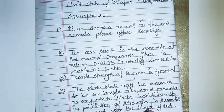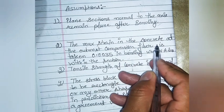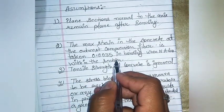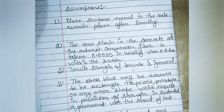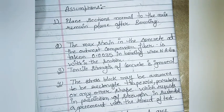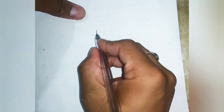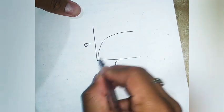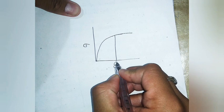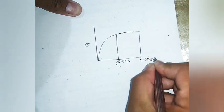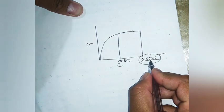The maximum strain in concrete at the outermost compression fiber is taken as 0.0035 in bending when the neutral axis lies within the section. The stress-strain diagram of concrete shows the value rises up to 0.002 and the maximum strain in concrete is 0.0035, which is the strain at failure of the section.